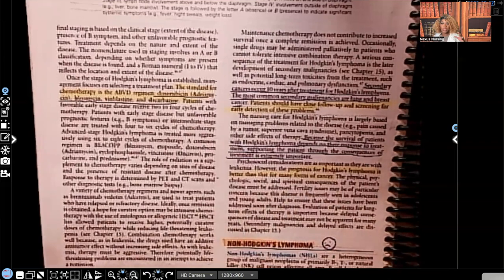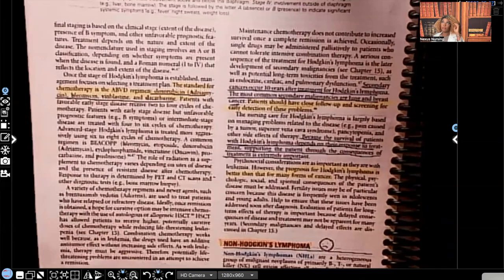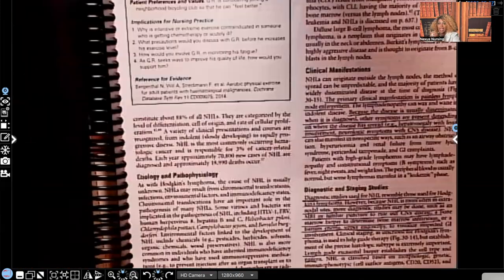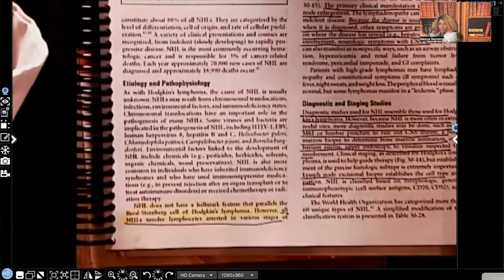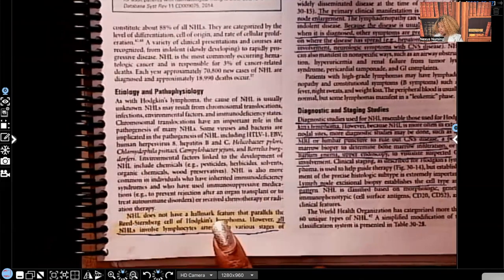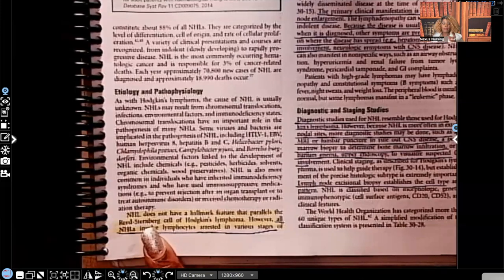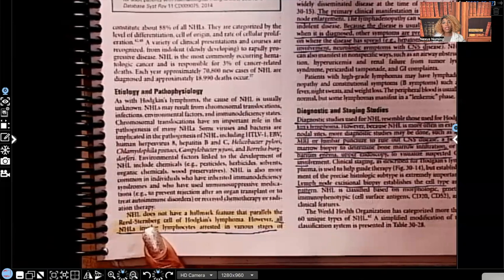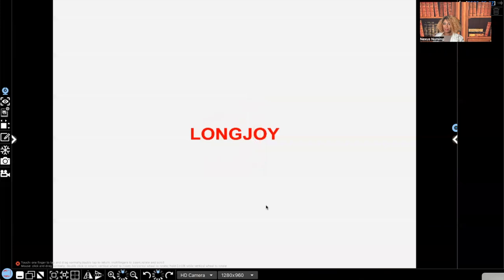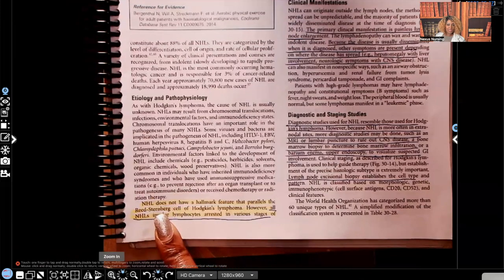Alright guys, so let's switch gears. We talked about Hodgkin's lymphoma. We talked about the Reed-Sternberg cells, right? Now we're going to jump into non-Hodgkin's lymphoma. Look what I put there. I put a sad face. Why? The prognosis is not very good for non-Hodgkin's lymphoma. Let's jump into the etiology and pathophysiology. Non-Hodgkin's lymphoma does not have a hallmark feature that parallels the Reed-Sternberg cells. There we go. I'm sorry guys, I get so excited. Forgive me. I won't do it again.